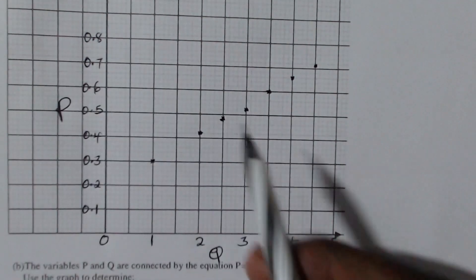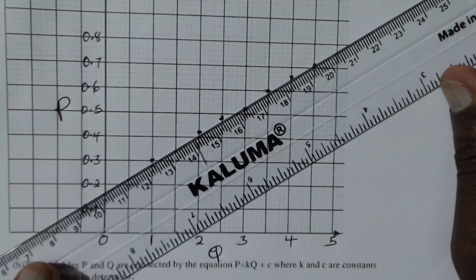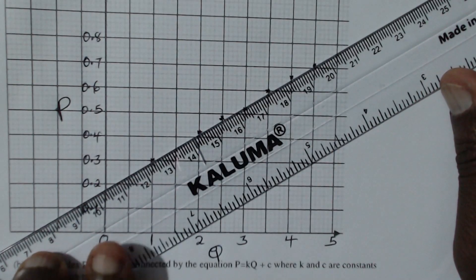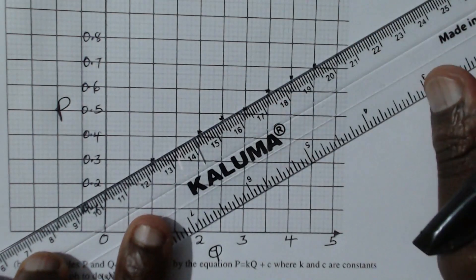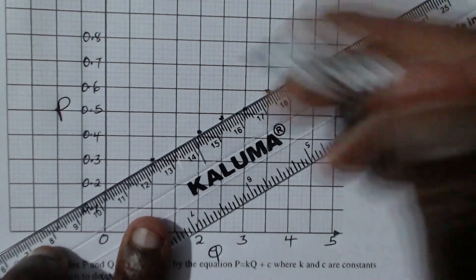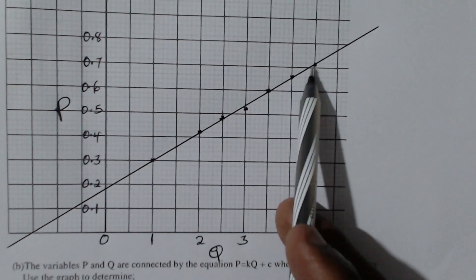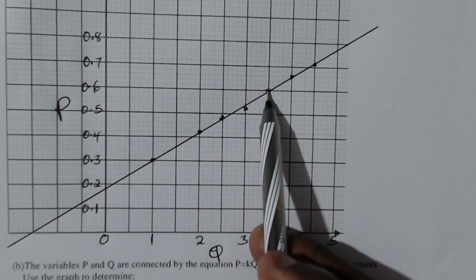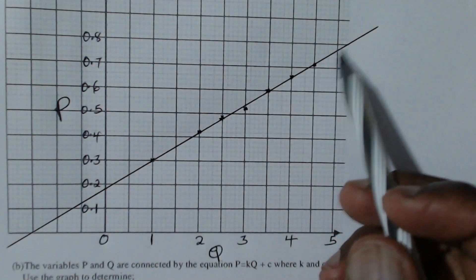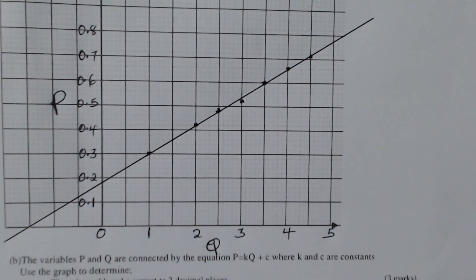Now to draw the line of best fit — it is a line that contains most of the points. Looking at these points, our line will pass through most of them. This point, this point, and this point lie on that line, with the others close by. That is how you draw the line of best fit.